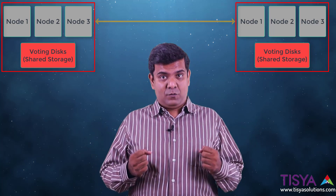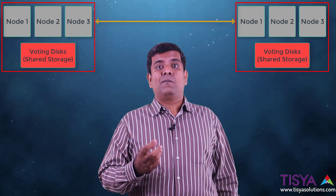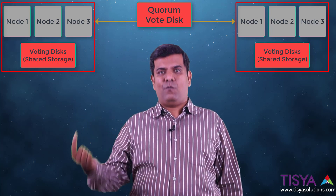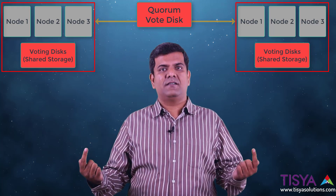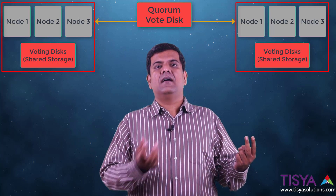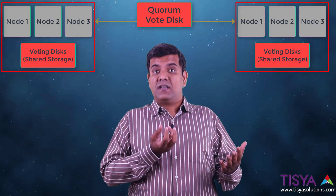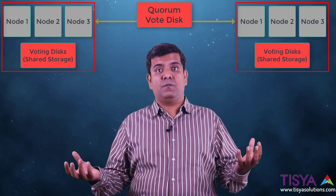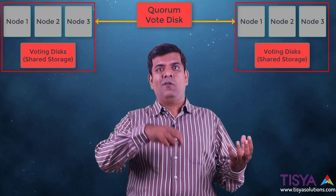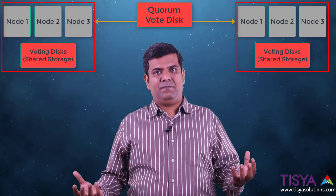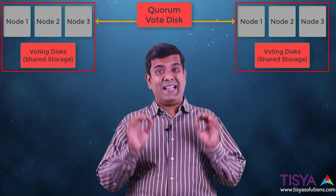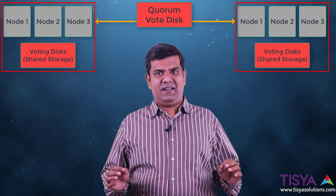To overcome the voting disk imbalance in an extended cluster, Oracle provides a way to use a quorum vote disk. You can place one voting disk at each site and add another voting disk on a separate network accessible to both sites. Whoever is able to reach this quorum voting disk will survive. That is the context behind the quorum vote disk, which is especially useful in an extended cluster.